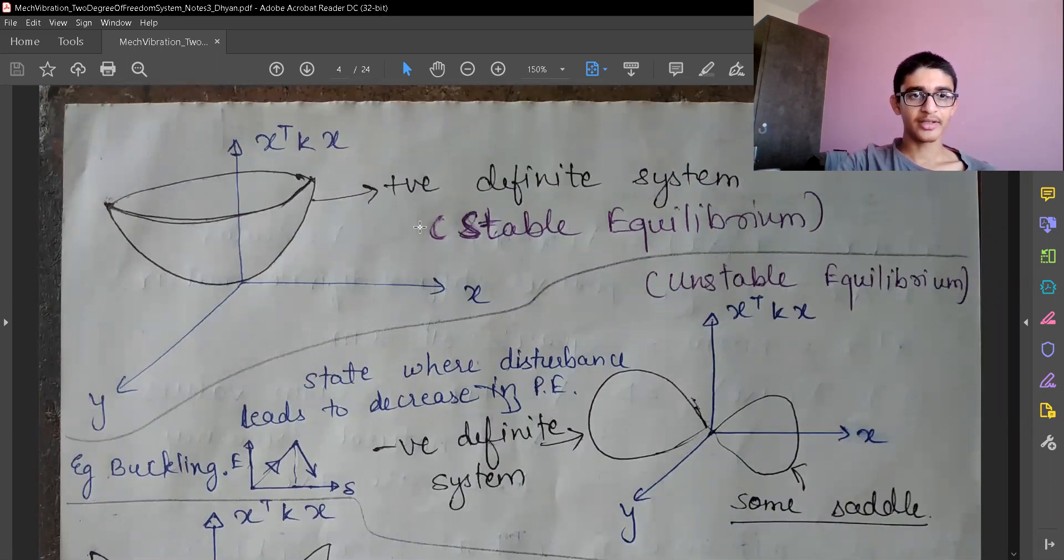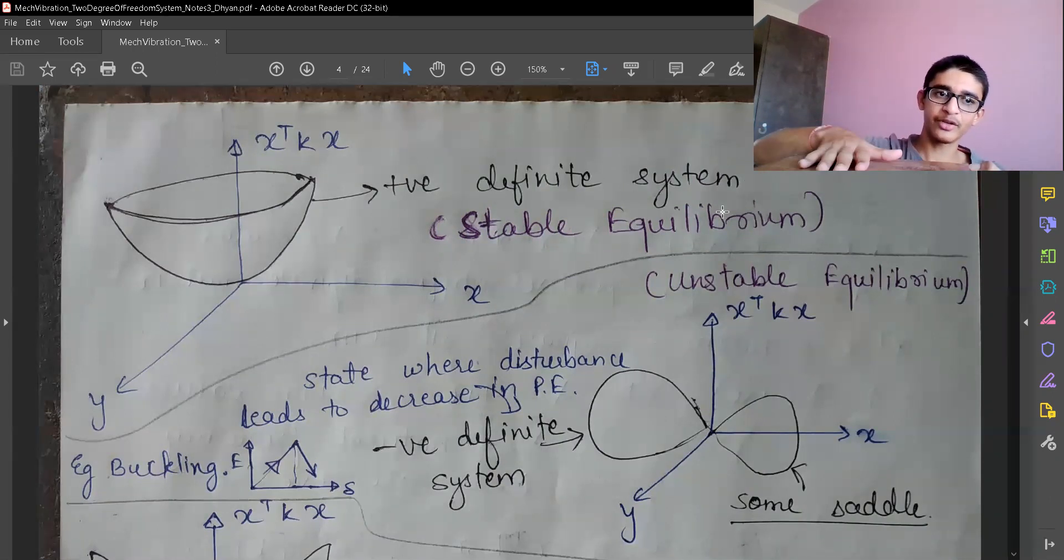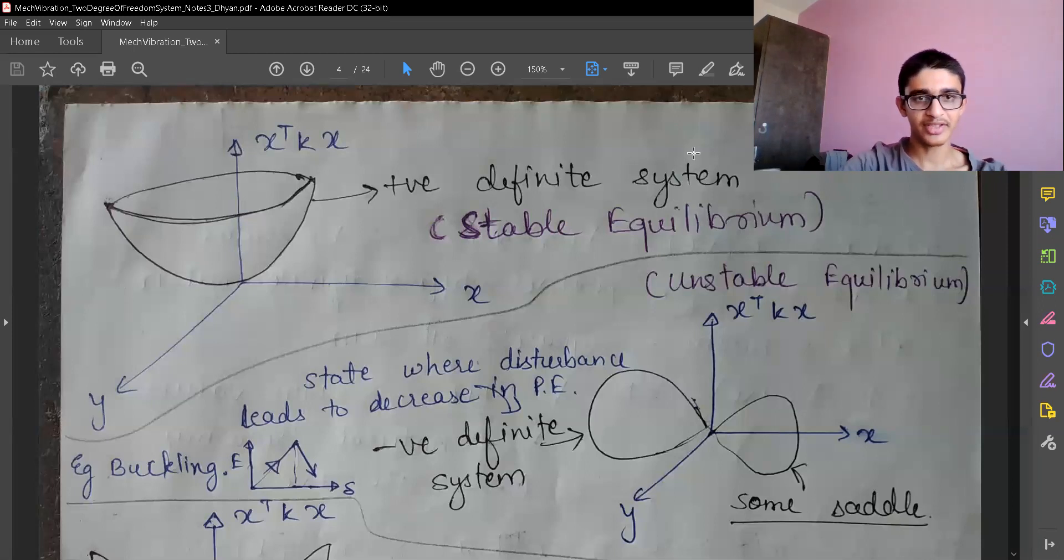Sorry - the positive definite system is the cone when placed on its circular portion. If I have a cone placed like this and I rotate it somewhere, disturb it, it will come back to its original point. So when the circular portion of the cone is placed on the surface.